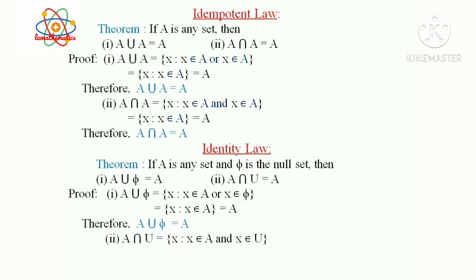Second, A intersection U: using the meaning of intersection, x ∈ A intersection B means x belongs to both A and B. Therefore, A intersection U equals {x : x ∈ A and x ∈ U} equals A, since every element of A is in the universal set U. Therefore A intersection U equals A.